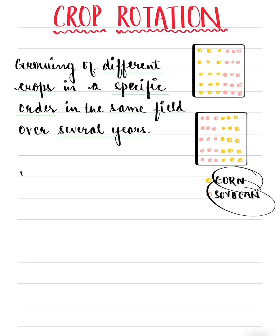Now let's talk about the advantages of crop rotation. Apart from increasing the soil fertility, it also prevents plant diseases and pests that may attack a particular crop.